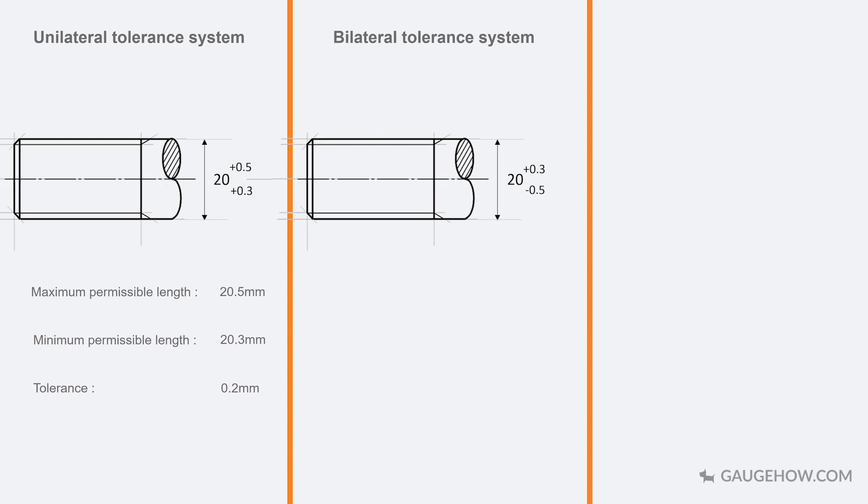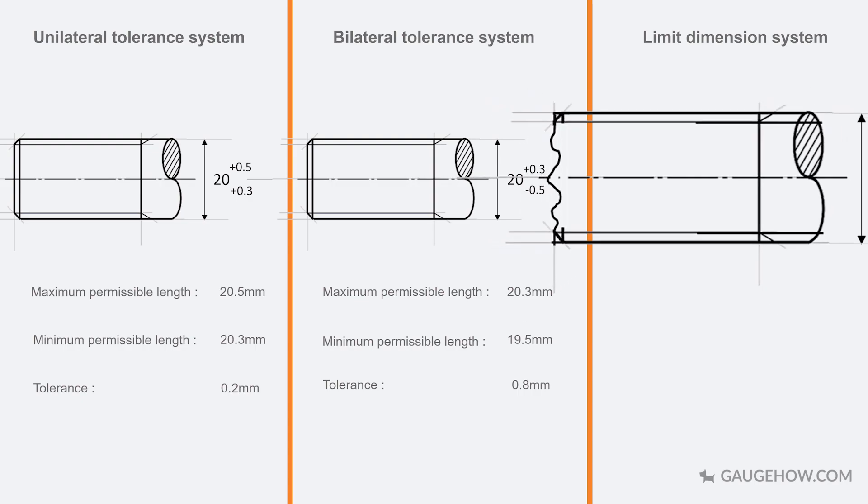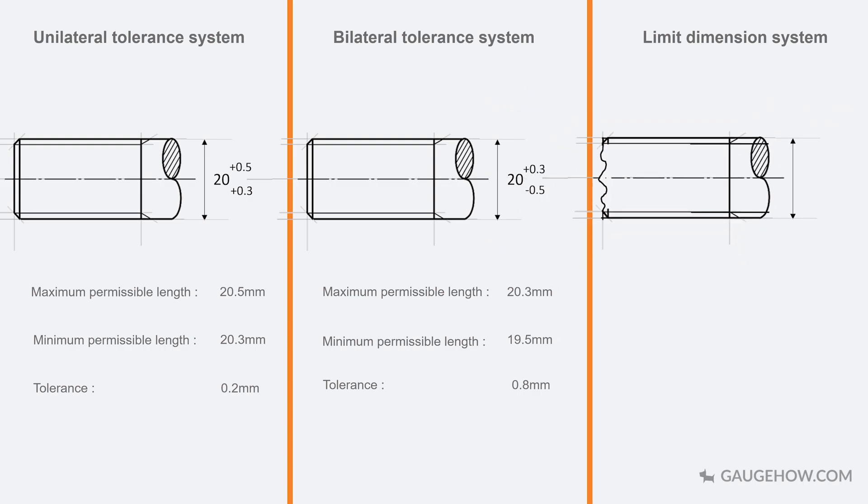In the third dimensioning system, i.e., the limit dimension system, the size and deviation of the part are specified by only the maximum and minimum dimension. For example, in this rod, the tolerance is given as the lower limit to be 20.3 mm and the upper limit to be 20.5 mm.